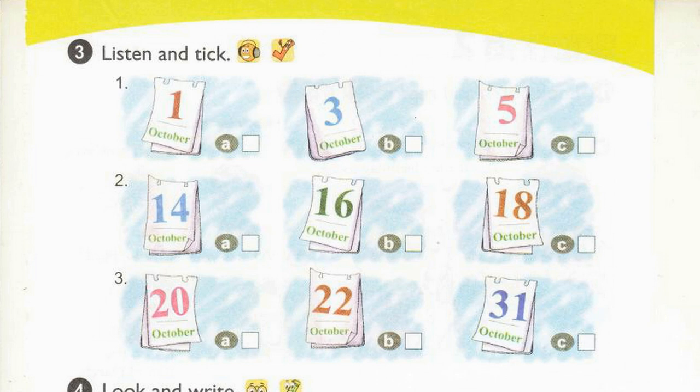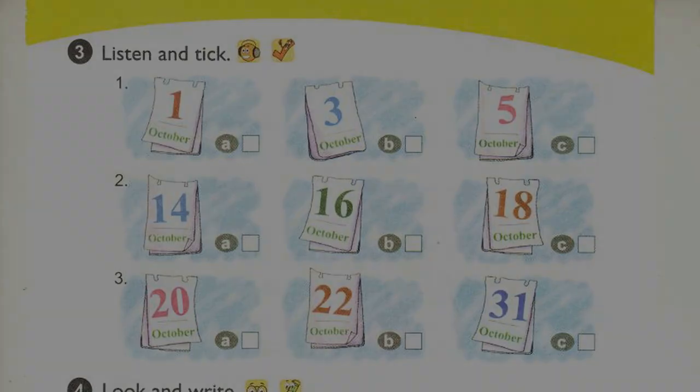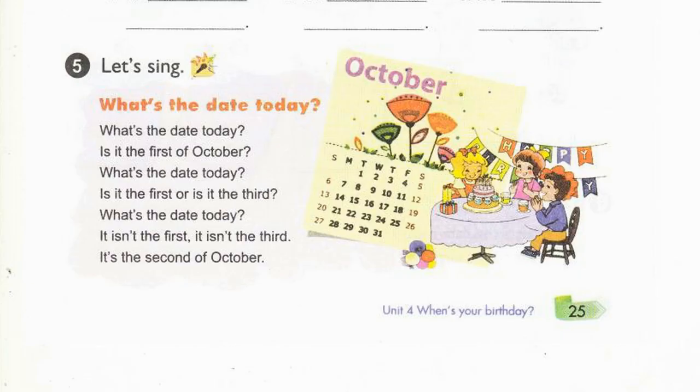3. What's the date today, Tom? The 20th of October. Sorry? It's the 20th of October. Thanks. Page 25, Activity 5. Let's sing. What's the date today?